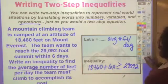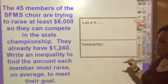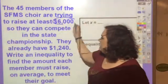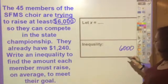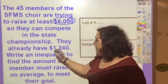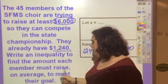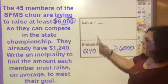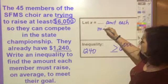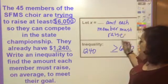45 members of the SFMS choir are trying to raise at least six thousand dollars to compete in the state championship. They want at least six thousand dollars, so 6,000 goes on the right side and 'at least' tells me they need more than that. They already have $1,240. Write an inequality to find the amount each member must raise on average. So x is the amount each member must raise, and there are 45 members.